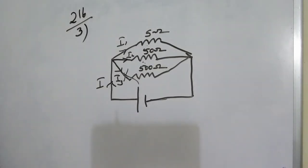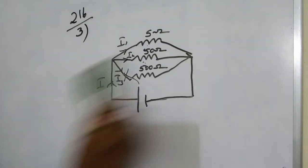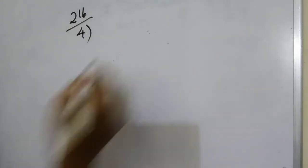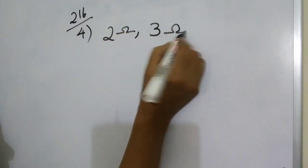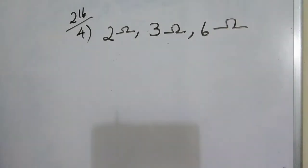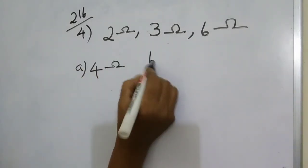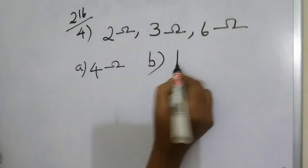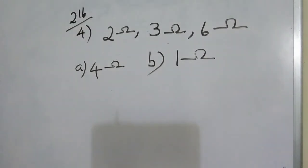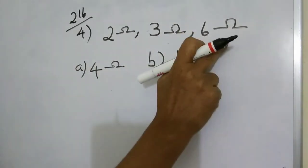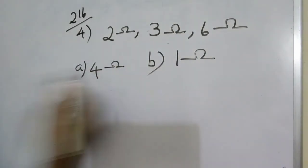Next problem: How can three resistors of resistances 2 ohms, 3 ohms, and 6 ohms be connected to give a total resistance of (A) 4 ohms and (B) 1 ohm? In which way do we have to connect these resistors in order to get a resultant resistance of 4 ohms? That is the first question.